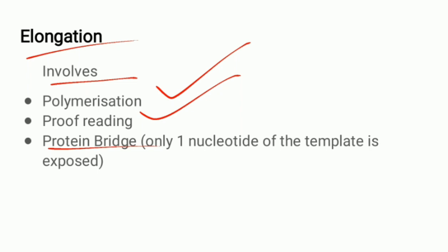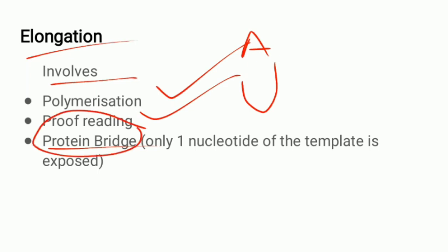The proofreading activity of RNA polymerase is not as efficient as that of DNA replication. Whenever RNA polymerase adds a base, it checks whether it is adding the correct complementary base — for example, if the template strand has adenine, RNA polymerase will add uracil and verify it is correct. The protein bridge ensures that only one nucleotide of the DNA template is exposed to the RNA at a time.